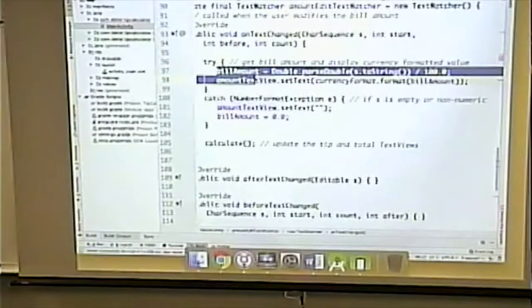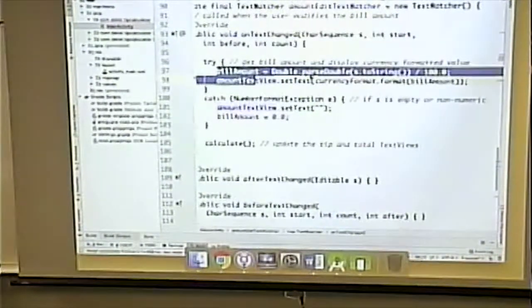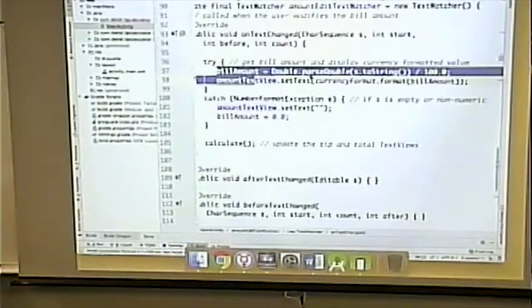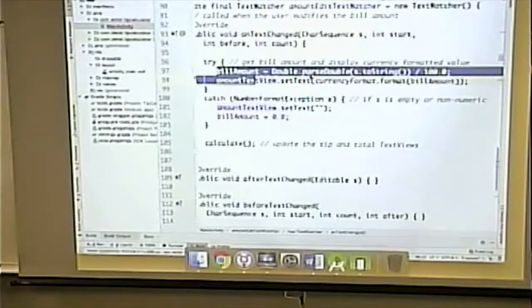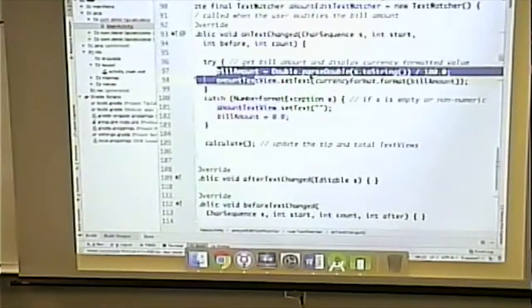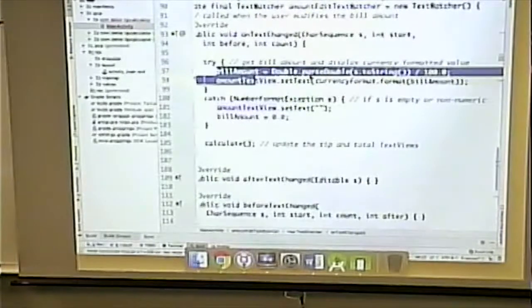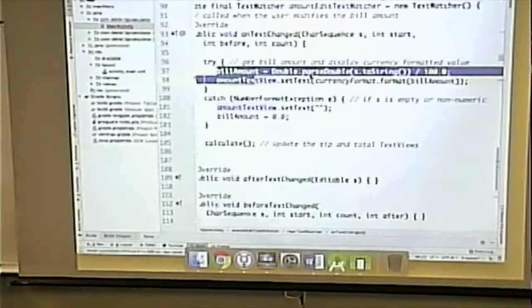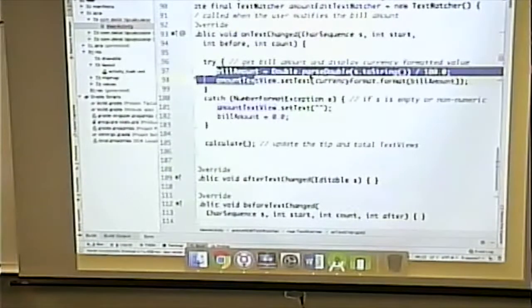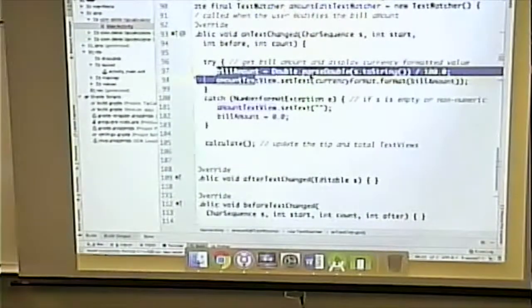So the bill amount is actually what I've entered into the edit text field. And if you remember from class last time, the edit text field just has a number with no decimals in it. We divide that by 100 to get the dollar and cents amount. And then we set the value of the other text view that's on top of our inner text field to format it nicely as currency.